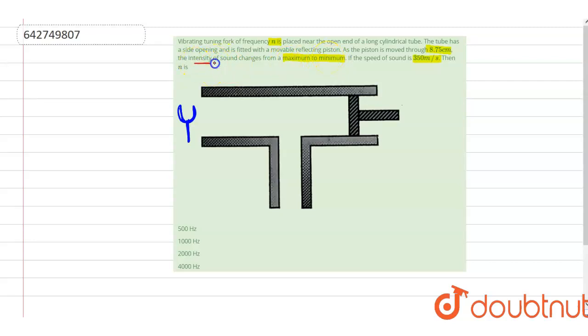When the intensity of the sound changes from maximum to minimum, there is going to be a path difference produced in the wave and that path difference is equal to lambda by 2, which is nothing but a distance between a node and an antinode.